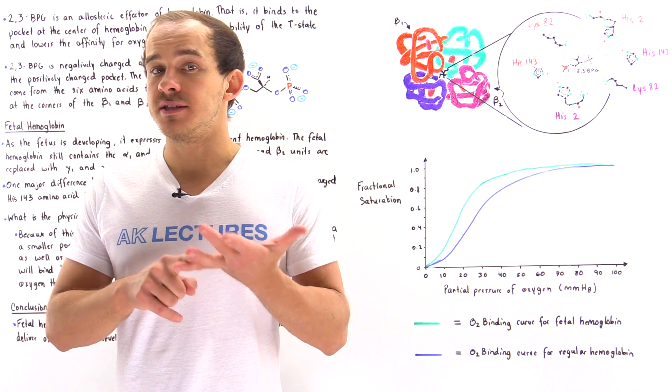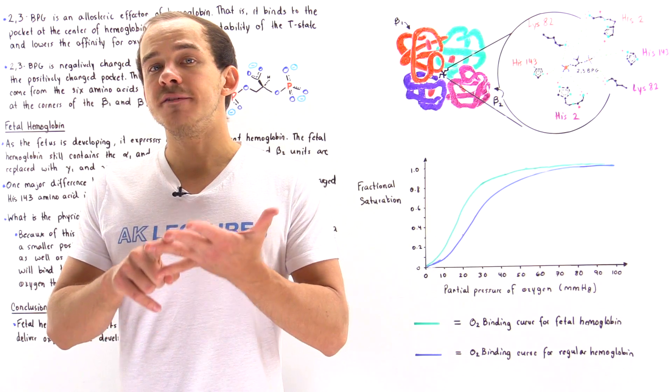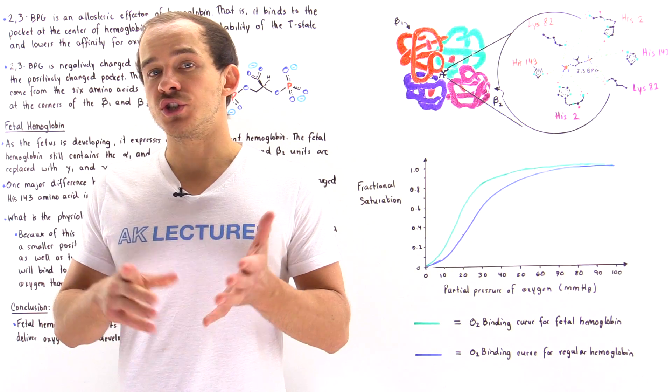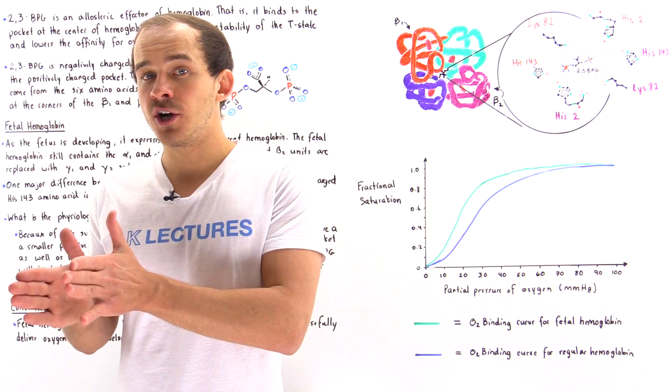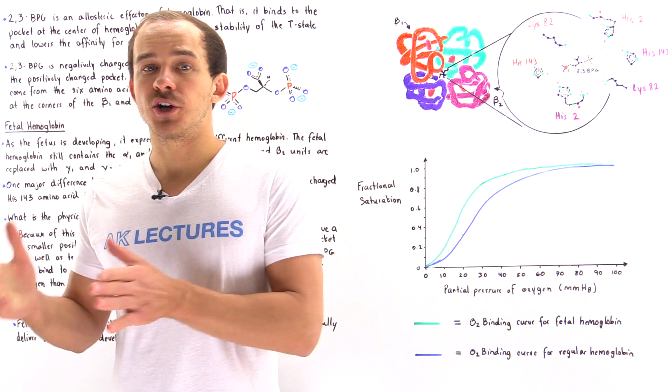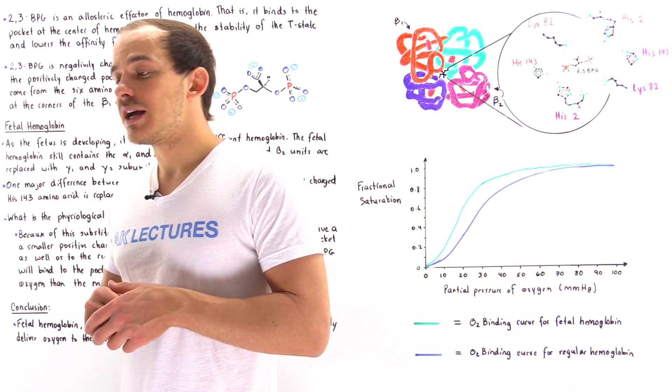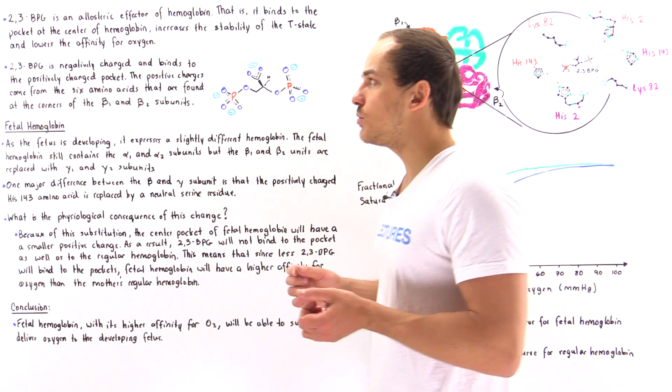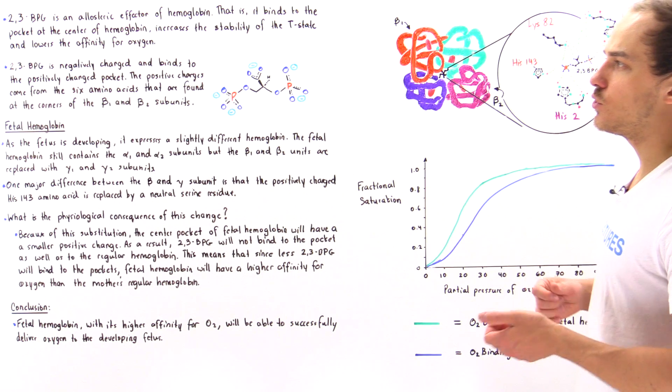By stabilizing the T-state, it lowers the affinity of hemoglobin for oxygen. So it basically shifts the entire oxygen binding curve to the right side with respect to pure hemoglobin that does not contain the 2,3-BPG.